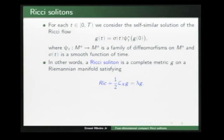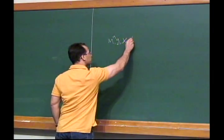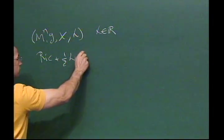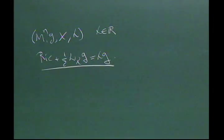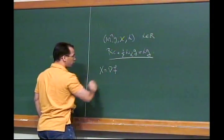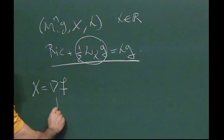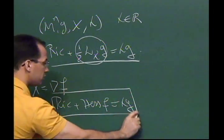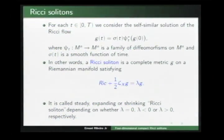A Ricci soliton is a Riemannian manifold with a complete vector field and a constant λ such that the Ricci curvature equals one-half the Lie derivative of the metric plus λg. In the special case where the associated vector field can be written in terms of the gradient of some smooth function f, we can write this term as Hessian(f) = λg, and these are called gradient Ricci solitons. Moreover, they are called steady, expanding, or shrinking if λ is zero, negative, or positive respectively.